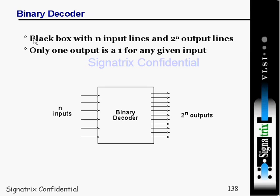Now coming to a decoder. A decoder is a black box with n inputs and 2 raised to power n output lines. In an n-input decoder, the inputs are n, and you will get 2 raised to power n outputs in case of a binary decoder. At a time, only one output is high. So if you want to select one output from many outputs, you can go with the binary decoder.